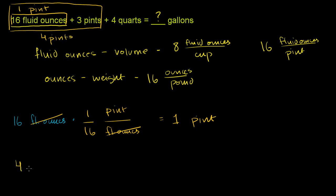Now we have 4 pints. Let's convert it to quarts. We know that there are 2 pints per quart. We want the pints to cancel out, or 1 quart is 2 pints, or 1/2 quart per pint. We wrote it this way because we wanted the quarts in the numerator and the pints in the denominator.